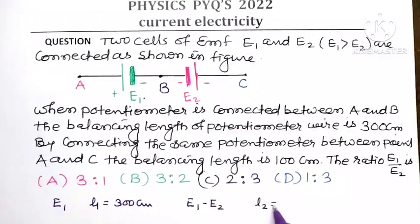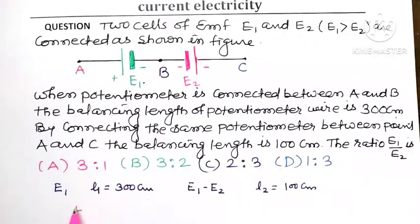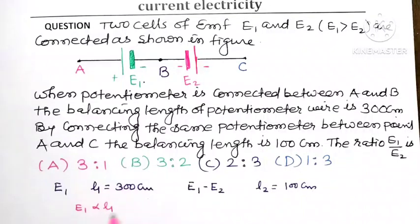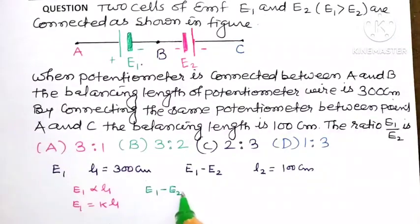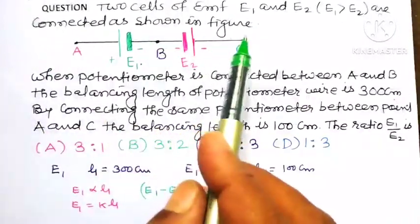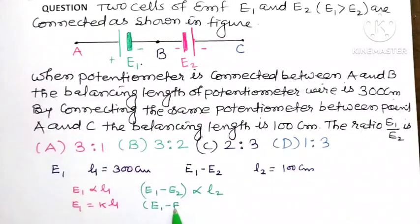The corresponding balancing length L2 is given as 100 centimeters. According to the principle of the potentiometer, E1 is proportional to L1, or E1 is equal to K times L1. Whereas E1 minus E2, when the potentiometer is connected between point A and C, E1 minus E2 is proportional to L2, or E1 minus E2 is equal to K times L2.